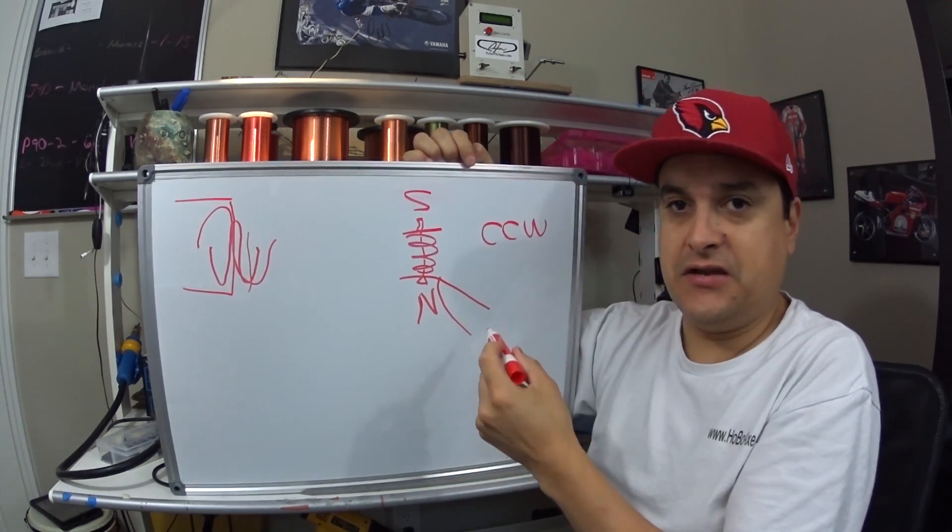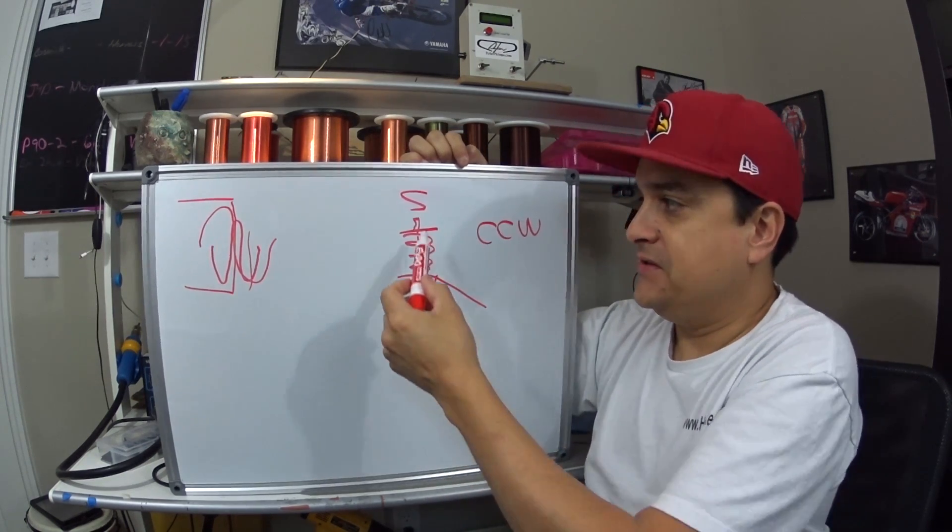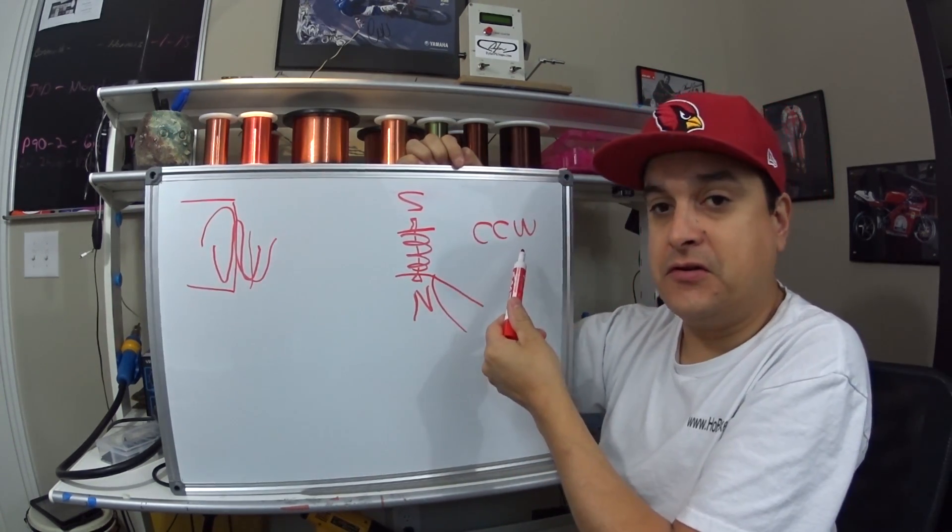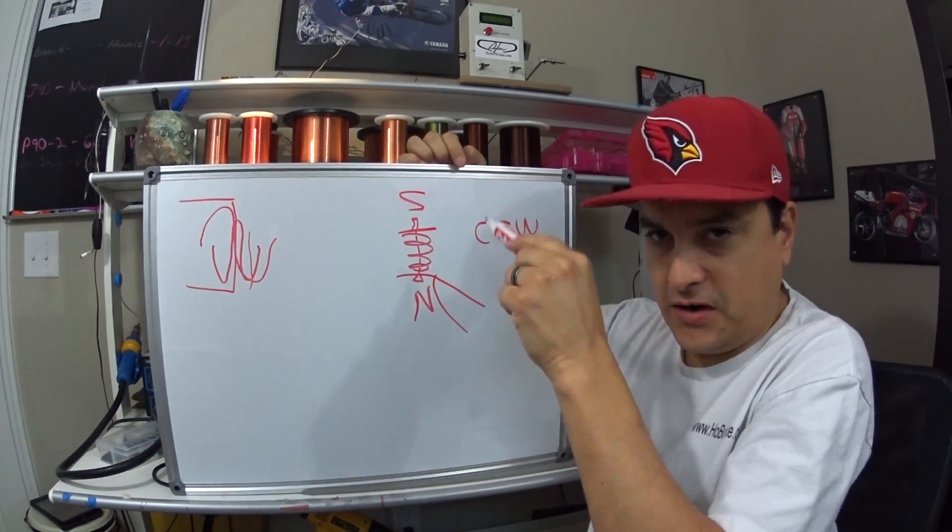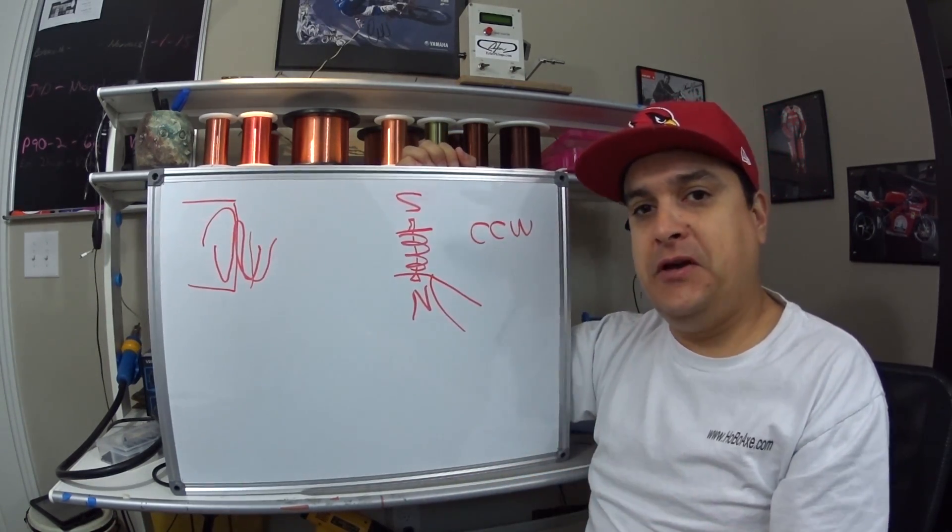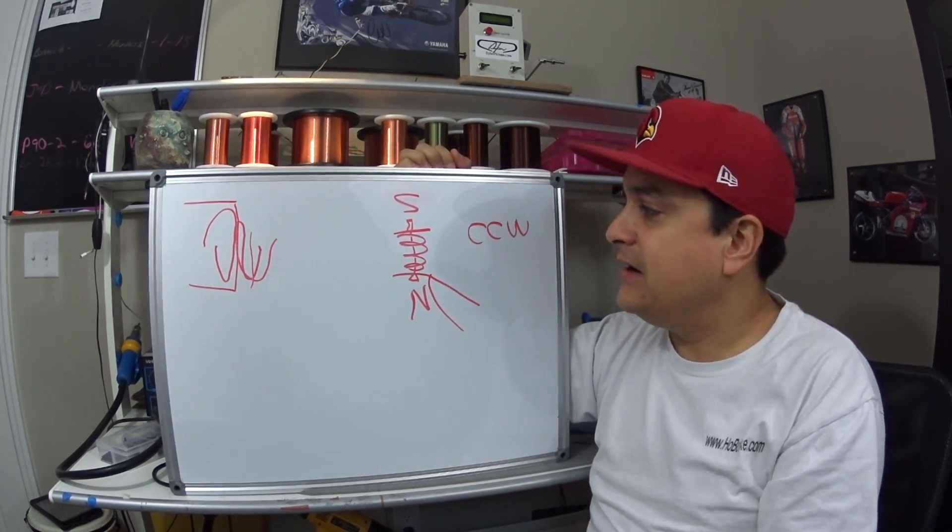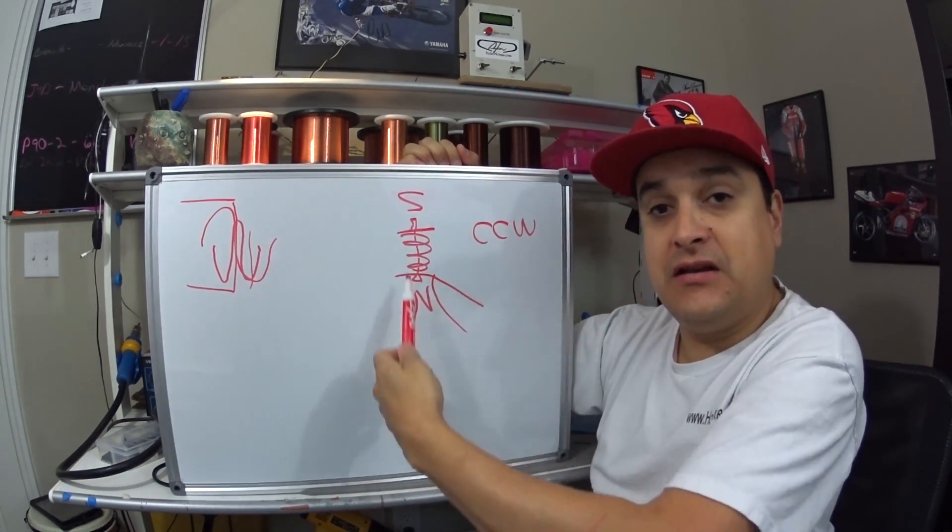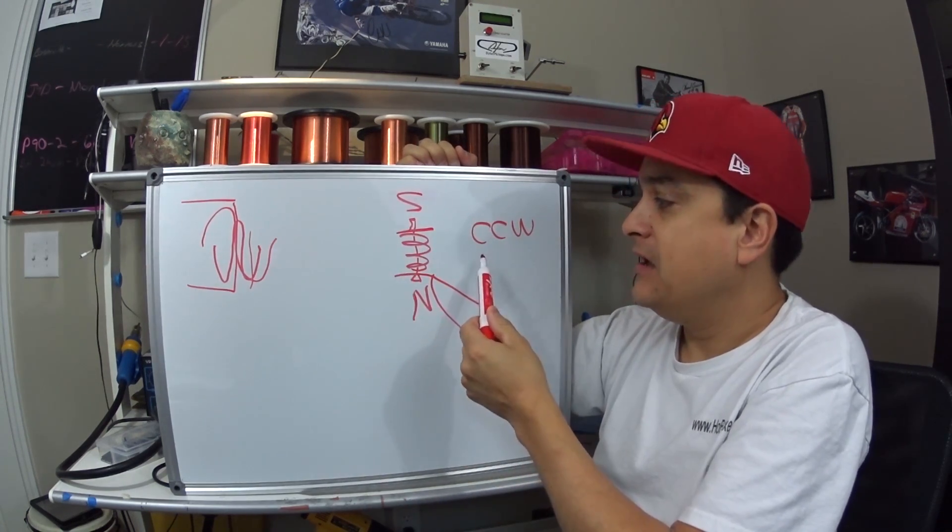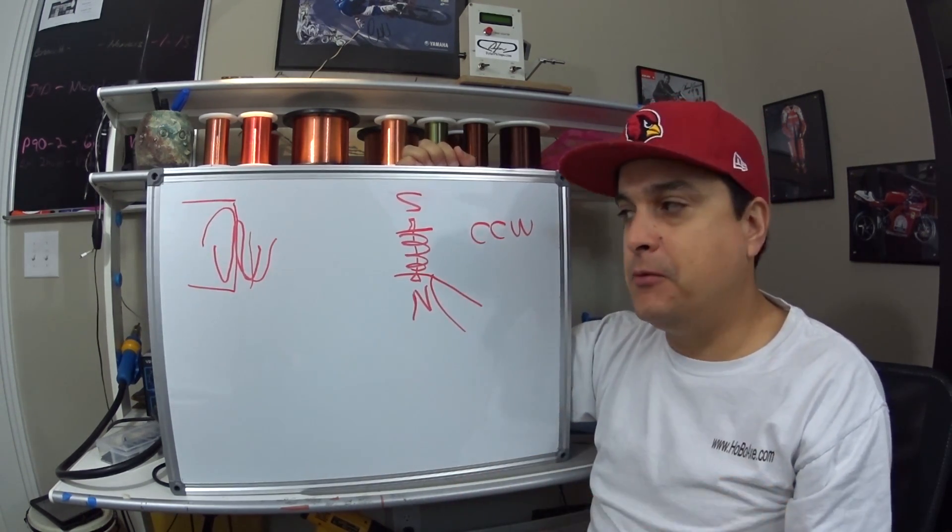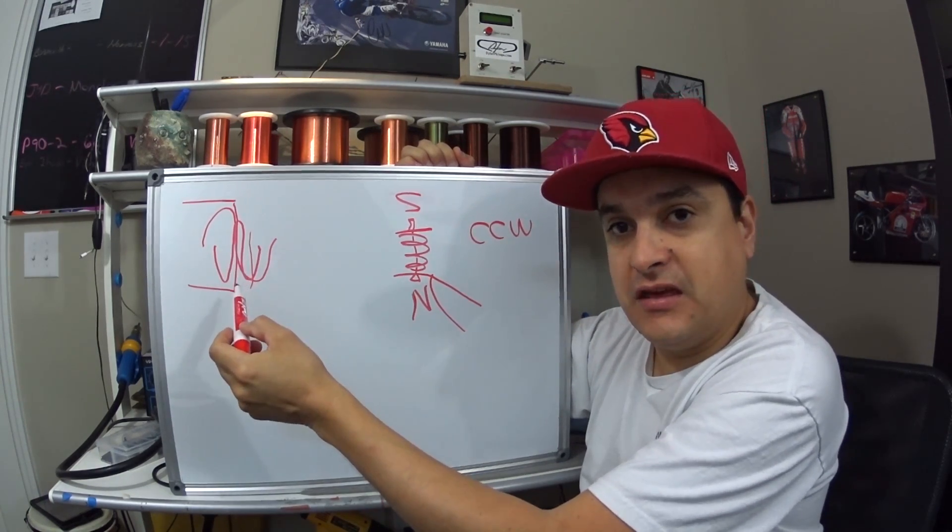So that Stratocaster pickup you just saw was south magnet facing up, north magnet facing down and counterclockwise wound. So the wire goes around it counterclockwise. If the next pickup that you hook up to your guitar is not the same polarity and with the magnet facing the correct direction and the wind exactly the same, your pickup will be out of phase causing this.